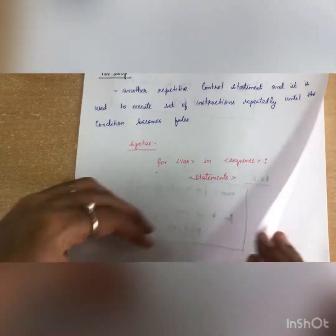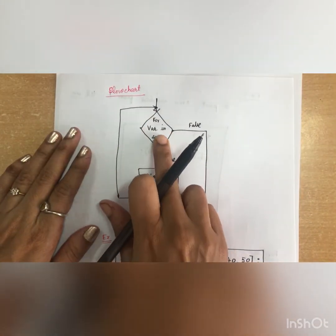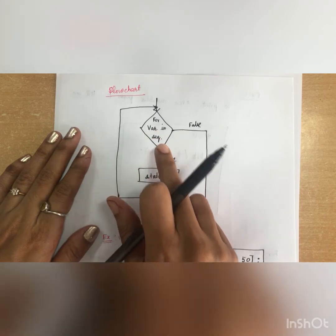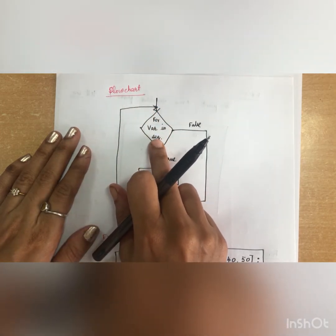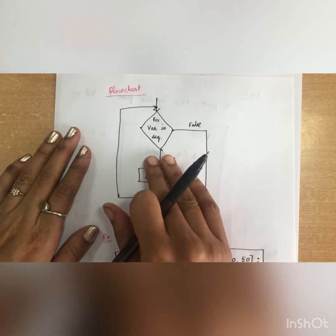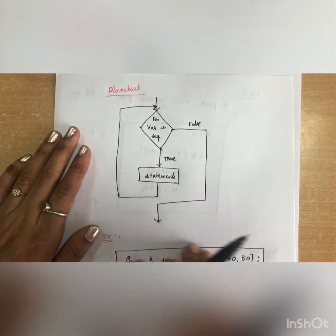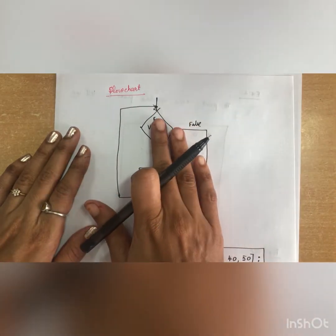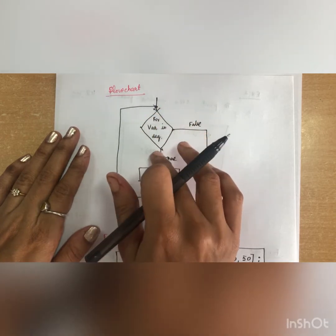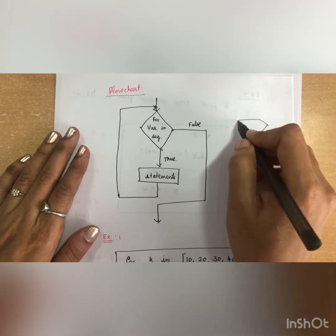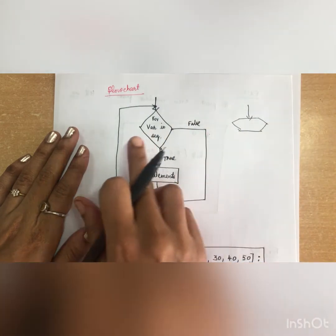Looking at the flowchart for the for loop: for the variable in sequence, if the variable is in the sequence it is true, it executes the statements and takes the next value in the sequence. If there are no more values in the sequence, it is false and it exits the for loop. The flowchart uses a decision box, sometimes shown as a rhombus symbol.